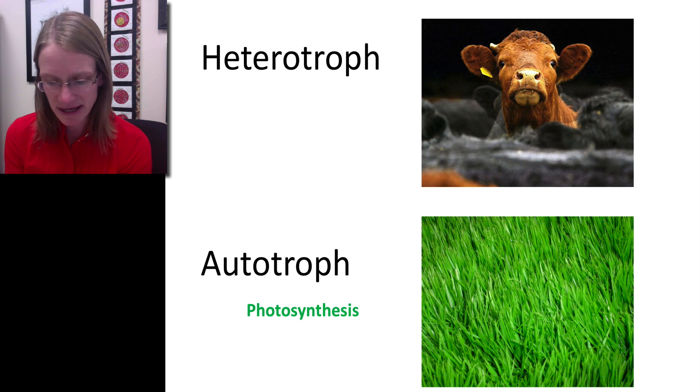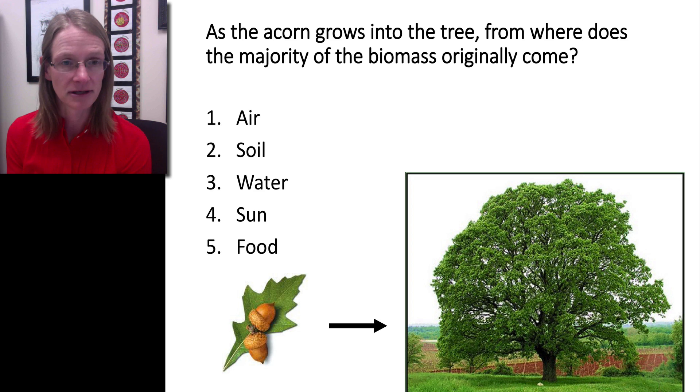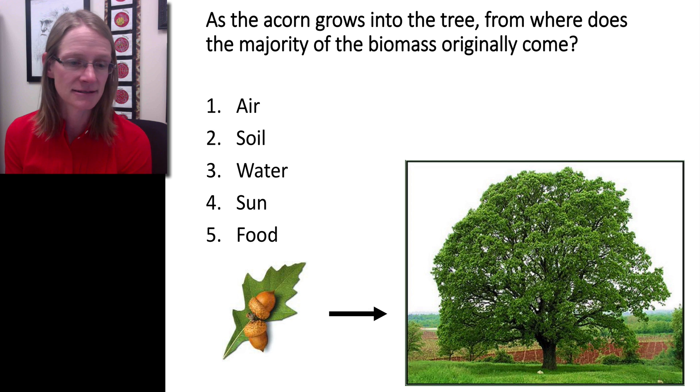Thinking back to that difference between the willow shoot and the willow tree from Van Helmont's example, we can think about an acorn. This acorn in the lower left-hand corner is really small, but over time it grows into this very large tree, clearly increasing significantly in biomass. So where does the majority of its biomass come from? We can go through this list individually again, from the bottom up.